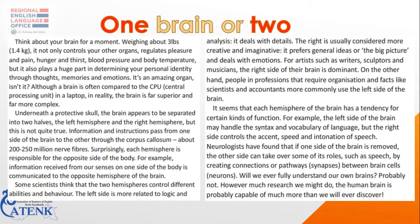Information and instructions pass from one side of the brain to the other through the corpus callosum — about 200 to 250 million nerve fibers. Surprisingly, each hemisphere is responsible for the opposite side of the body. For example, information received from our senses on one side of the body is communicated to the opposite hemisphere of the brain.